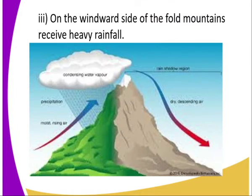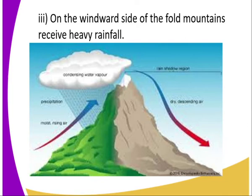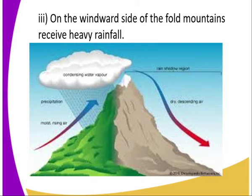Another significance: the windward side of the fold mountains receives relief rainfall. This is a positive one. But you can also get a negative one — one side of the mountain is green and the other side is dry. On the leeward side of the mountain formed by folding, it does not receive much rainfall, and if it does receive rainfall, it is very little, so it cannot sustain agricultural activity.